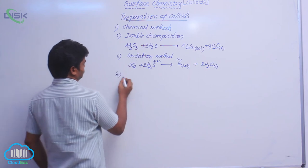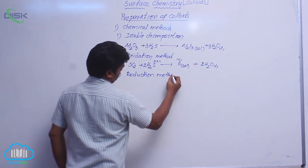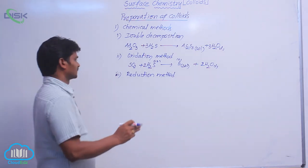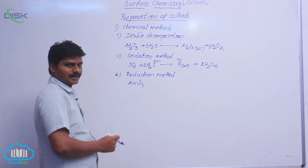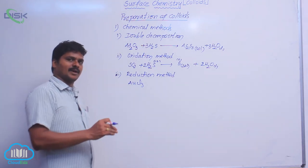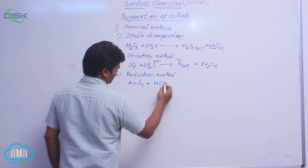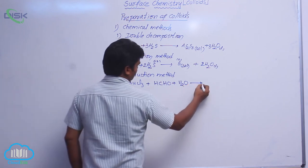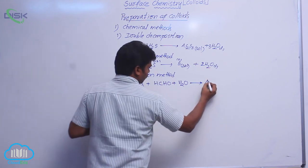Third one: reduction method. Here reduction means oxidation state decreases. For that, let us take AuCl3. This is auric chloride. In auric chloride, gold has plus 3 state. In aurous chloride, gold has plus 1 state. This is auric chloride and formaldehyde, HCHO plus water.